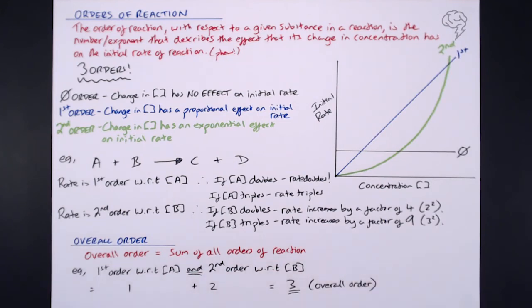So for the above reaction, if it's first order with respect to A and second order with respect to B, we add those together to give the overall order for the reaction, which is three. Of course, if you have another reactant that is zero order, that's plus zero — it doesn't make any difference. First and second orders, you just add them up for all your reactants, and that gives you the overall order for the reaction.